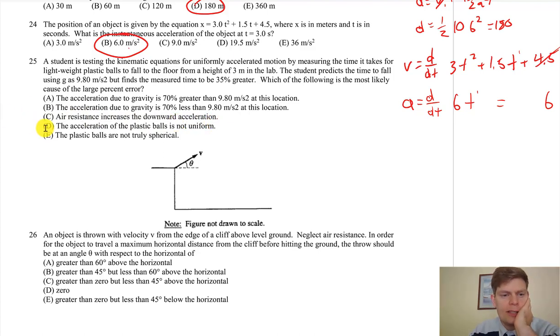Would air resistance increase the downward acceleration? I haven't seen air resistance shove me down faster, so probably not that. I would say the acceleration of plastic balls is not uniform, so it's not constantly 9.8. It would probably be 9.8 initially because your drag force from air depends on your velocity. So it would be D—you've got some drag forces and they're screwing stuff up. And who cares if the balls are spherical? It's air resistance.